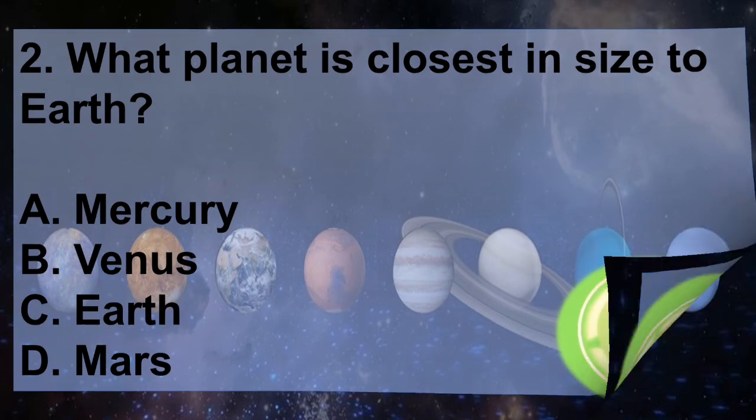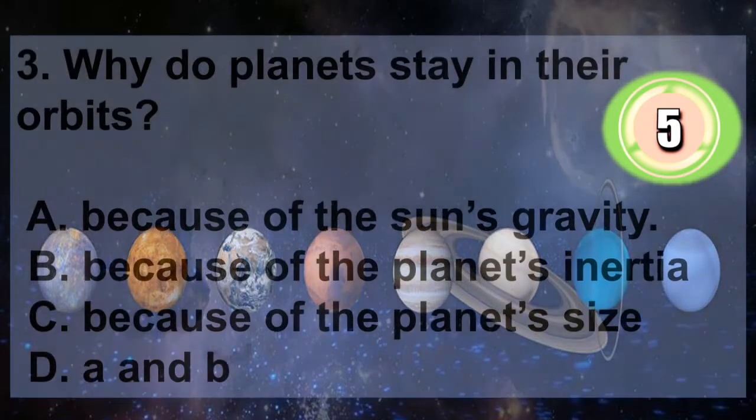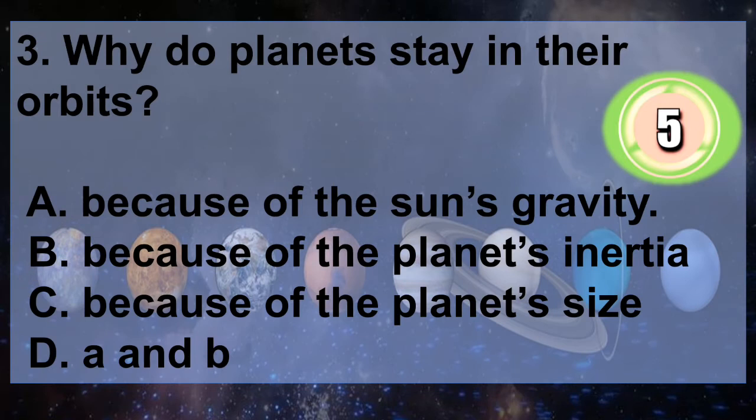Question 3: Why do planets stay in their orbits? A. Because of the Sun's gravity, B. Because of the planet's inertia, C. Because of the planet's size, D. A and B. You have 5 seconds to answer. Time's up.